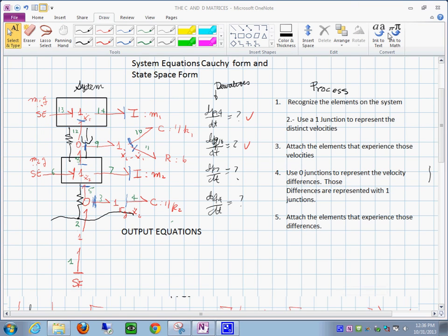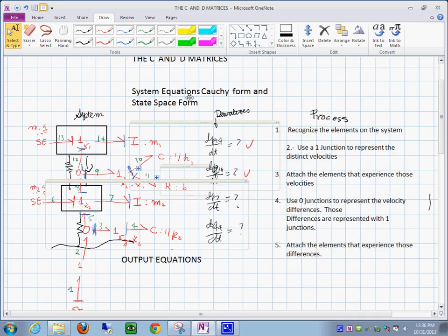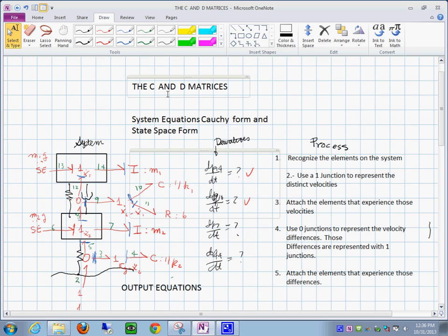Today we are going to see the second part of the state space form. We need to find the so-called output equations and we need to find out the C and the D matrices. So that's the topic of today's lecture: find the C and the D matrices.